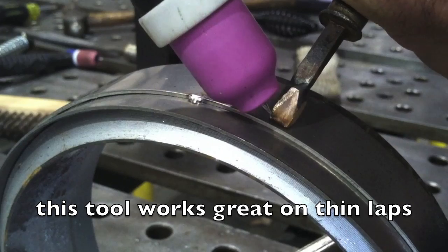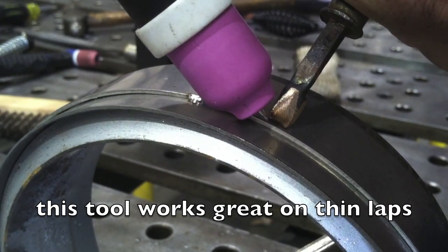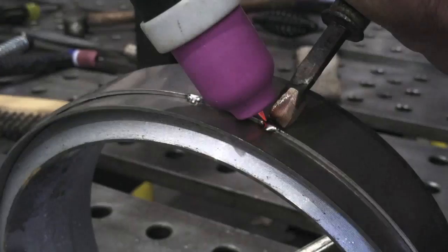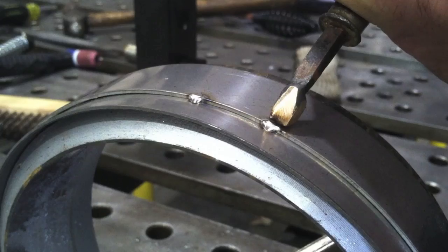And also the little handmade tool there works great on really thin lap joints. I've used this all the way down to 12 thousandths, which you really need no gap and something that thin.